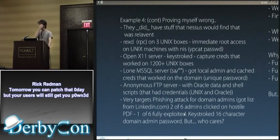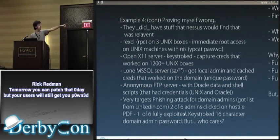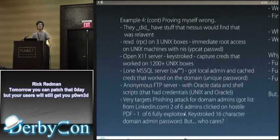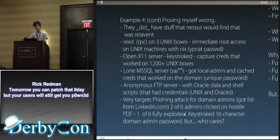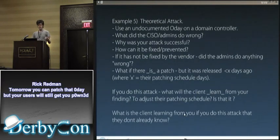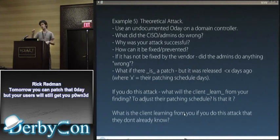To prove myself wrong: this place had a lot of vulnerabilities that tools like Nessus would have found. RexD was on three machines — you don't see that anymore, but if you do, you get root immediately. OpenX11, we keylogged a guy whose account worked on 1,200 machines. Blank SA, anonymous FTP with Oracle data, passwords, credentials, shell scripts. We also did a targeted phishing attack — pretty standard, emailed someone, and of course a guy opened it. That's why I'm saying I'm proving myself wrong — the root cause of a lot of those was one thing that just needs to be fixed.